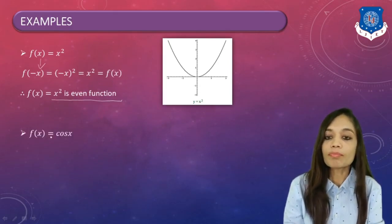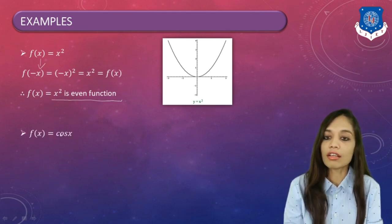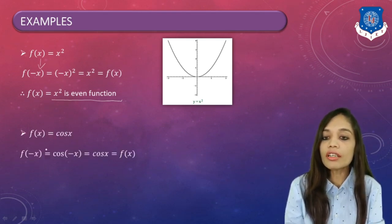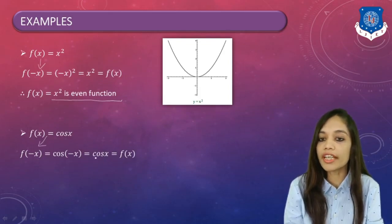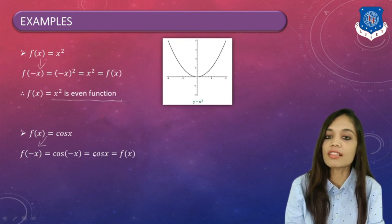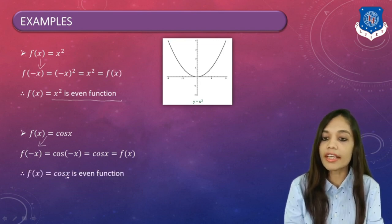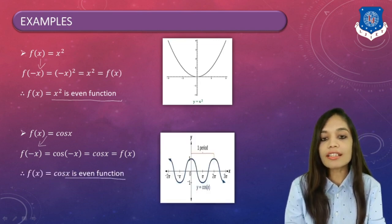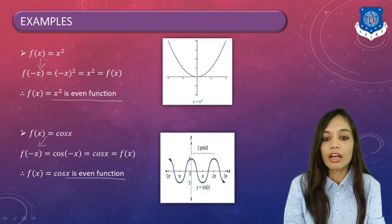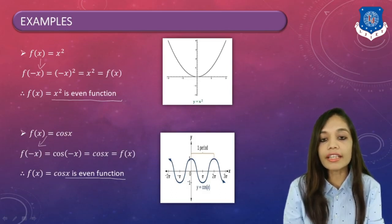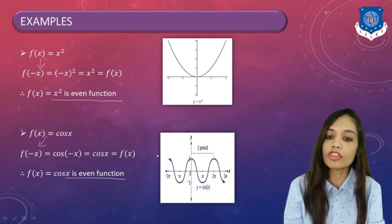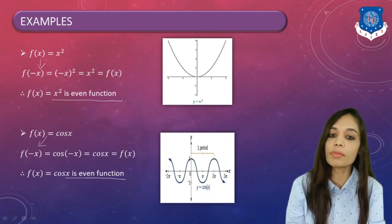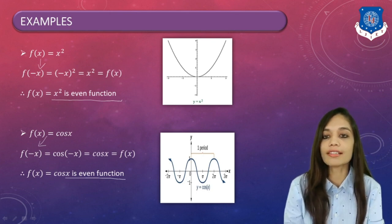Next, let us consider cos x. Replacing x by −x: cos(−x) = cos x. Hence cos x is an even function. Looking at its graph, it is again symmetric about the y-axis, confirming that the graph of an even function is always symmetric about the y-axis.